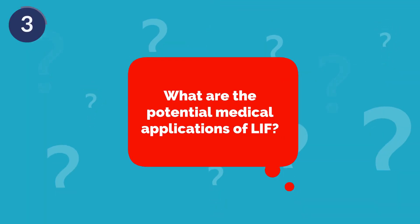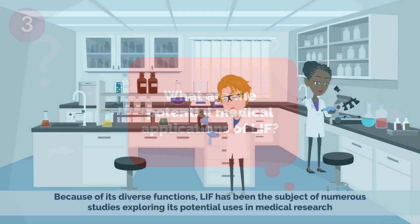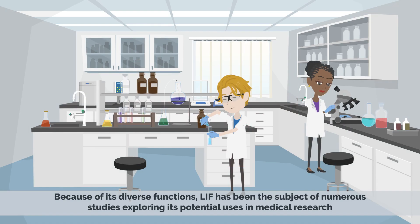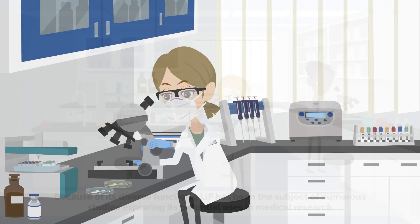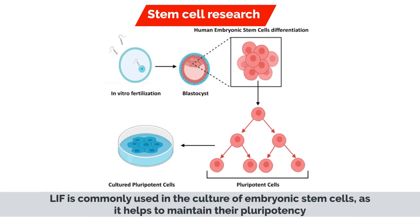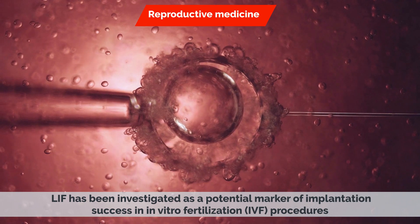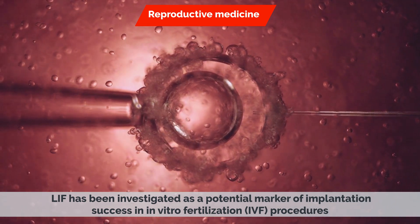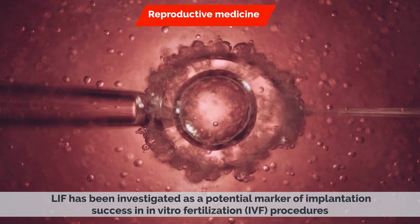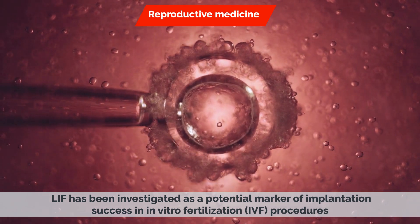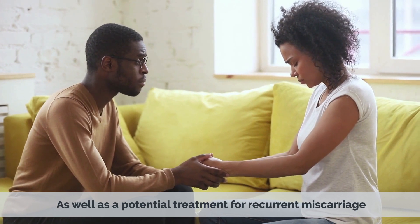What are the potential medical applications of LIF? Because of its diverse functions, LIF has been the subject of numerous studies exploring its potential uses in medical research. In stem cell research, LIF is commonly used in the culture of embryonic stem cells, as it helps to maintain their pluripotency, or ability to differentiate into any type of cell in the body. LIF has also been investigated as a potential marker of implantation success in in vitro fertilization, IVF, procedures.